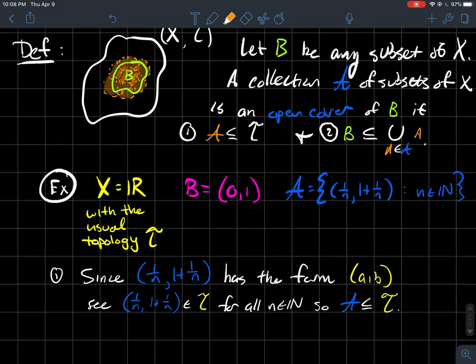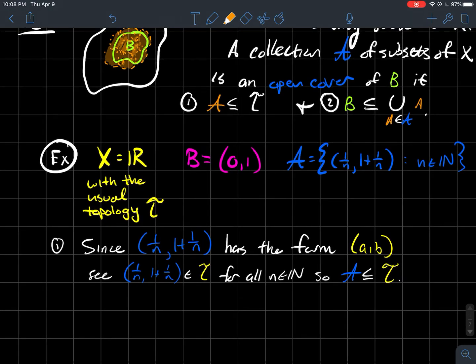I know that's the usual topology on the real line. Those sets A comma B form a basis for that topology. Therefore, each one of these blue sets is a member of the usual topology on the real line. So that shows then that every element of the blue set has to be in the usual topology on R. So number one's good.